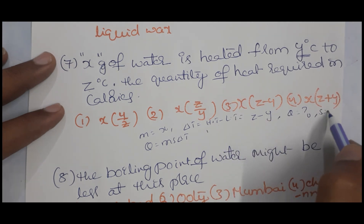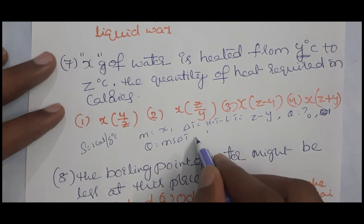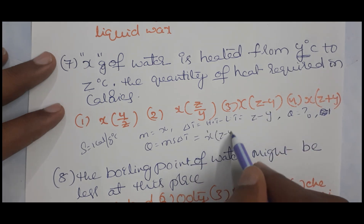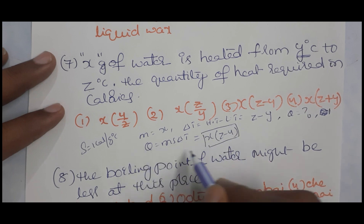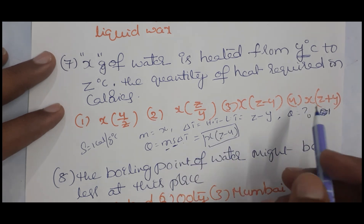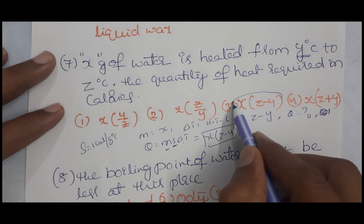The specific heat of water S equals 1 calorie per gram per degree Celsius. So M equals X, delta T equals Z minus Y. Therefore Q = X × 1 × (Z − Y) = X(Z − Y) calories. This is the most important answer.